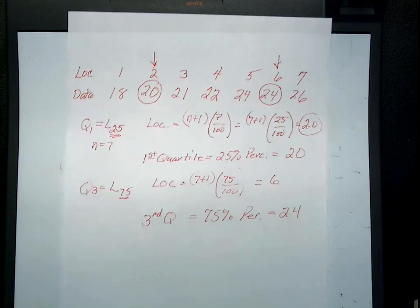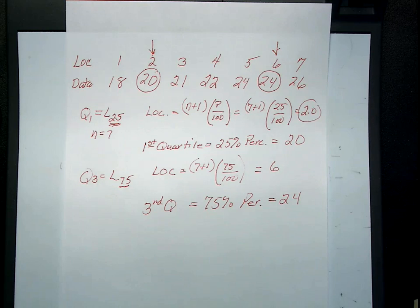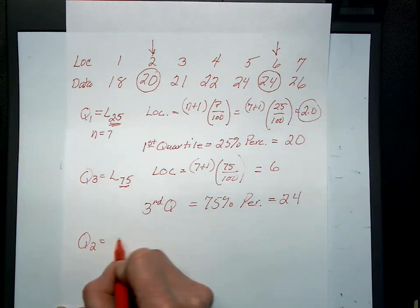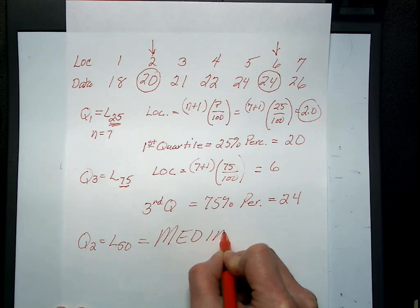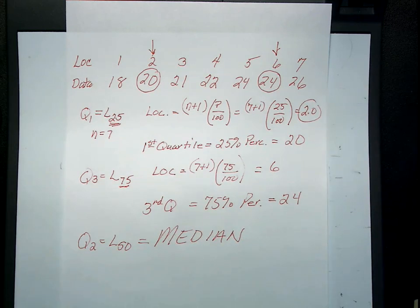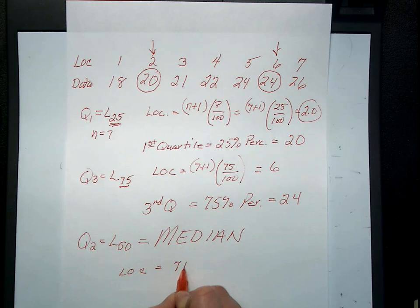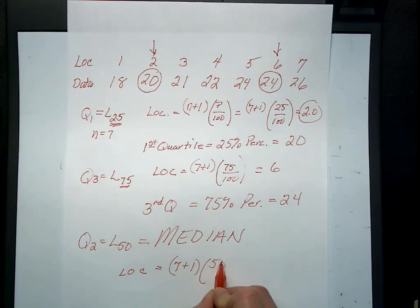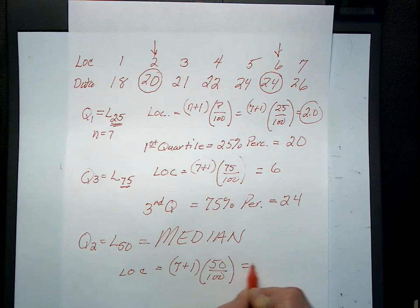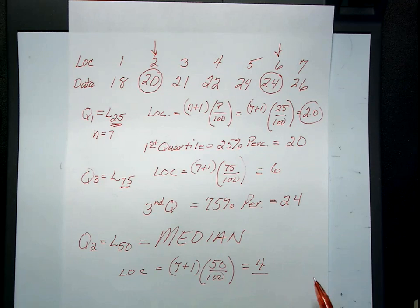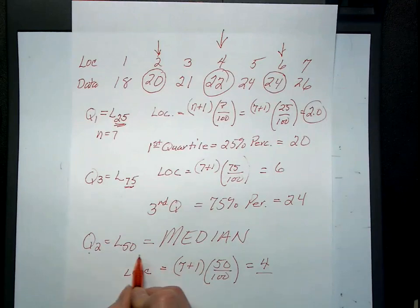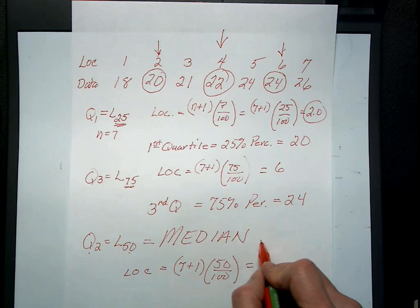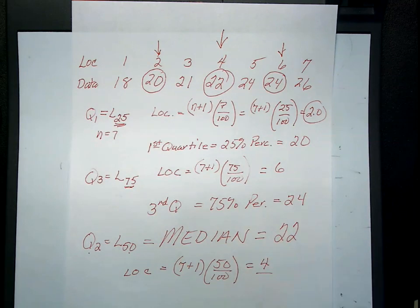The last one I'd like to go over is the most important: your second quartile or 50th percentile, which is also your median, your middle data point. Let's locate it: (7+1), again sample size, times 50 over 100. It's your 50th percentile, which locates in position 4. Where is position 4? Right here. So our second quartile or 50th percentile or median is 22 in this example.